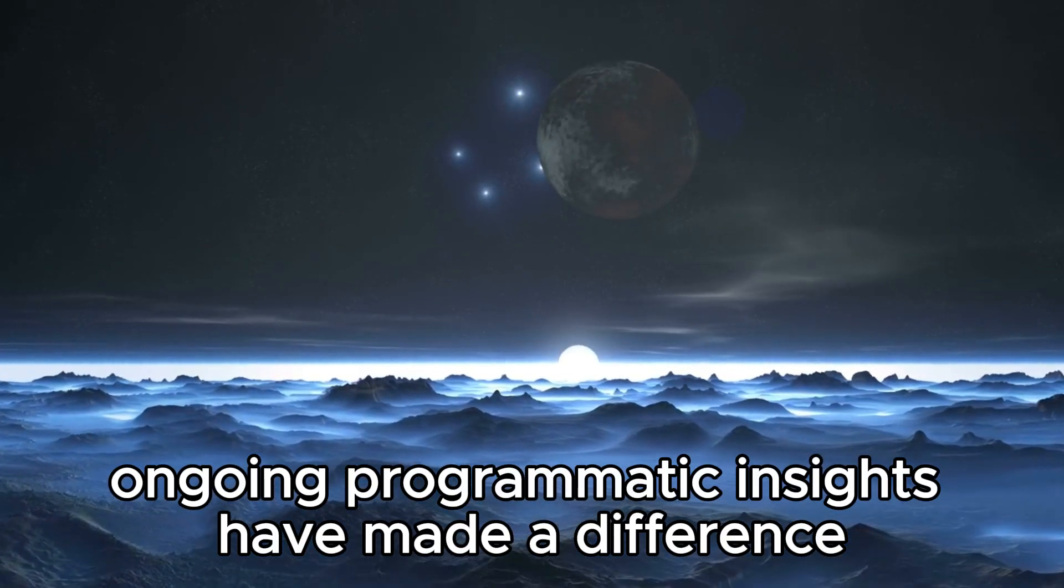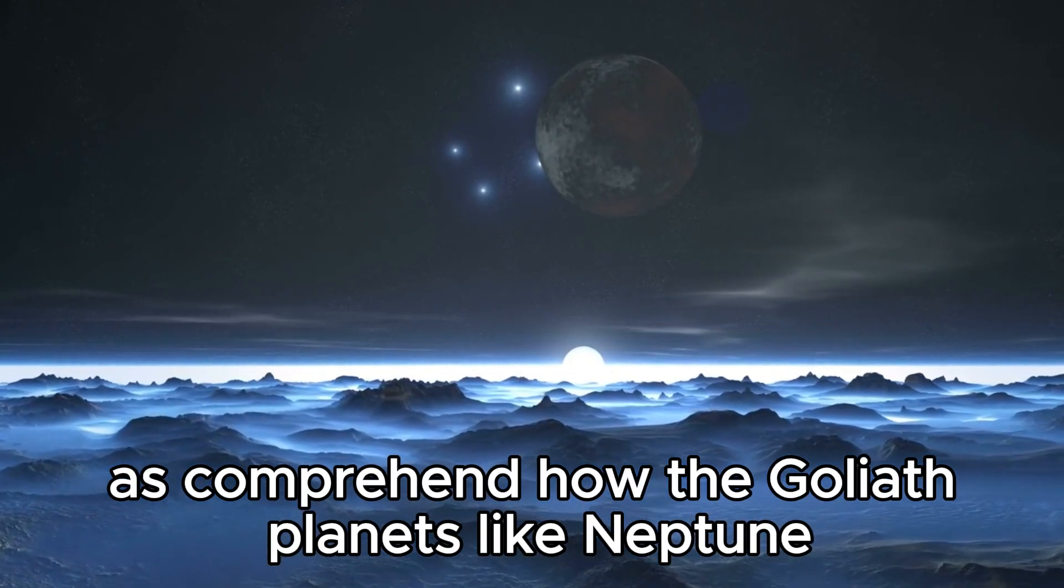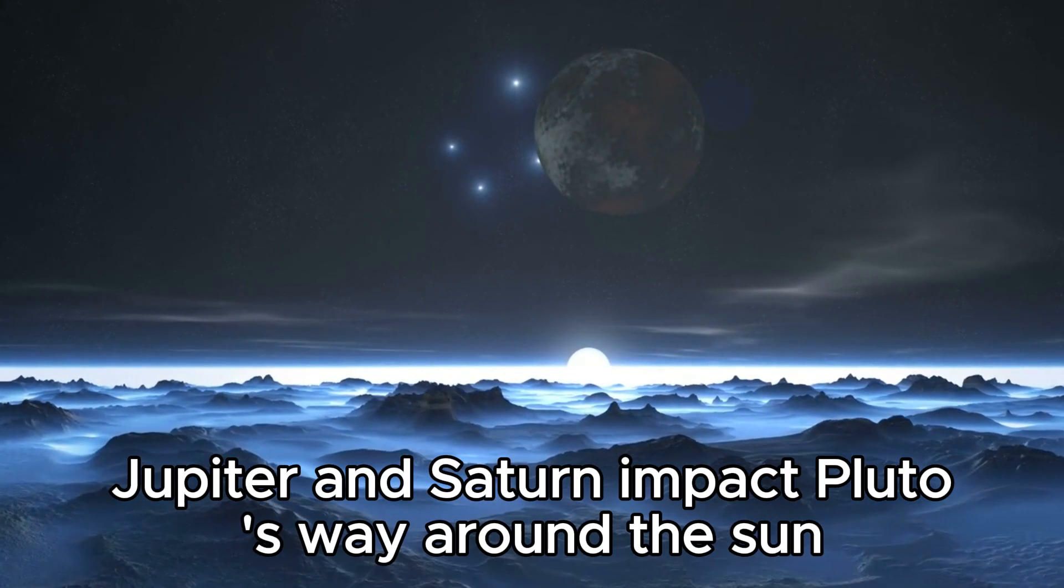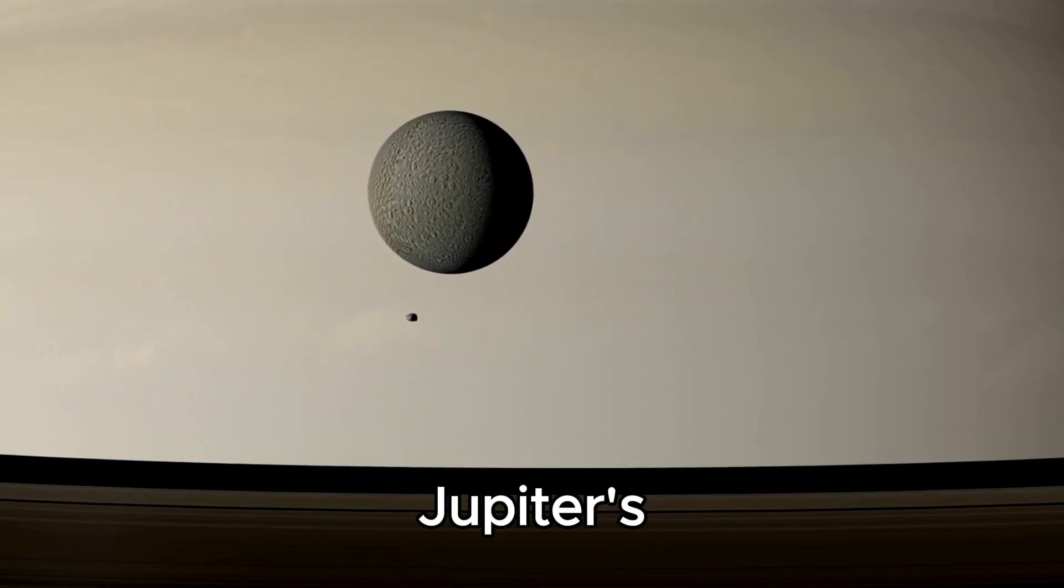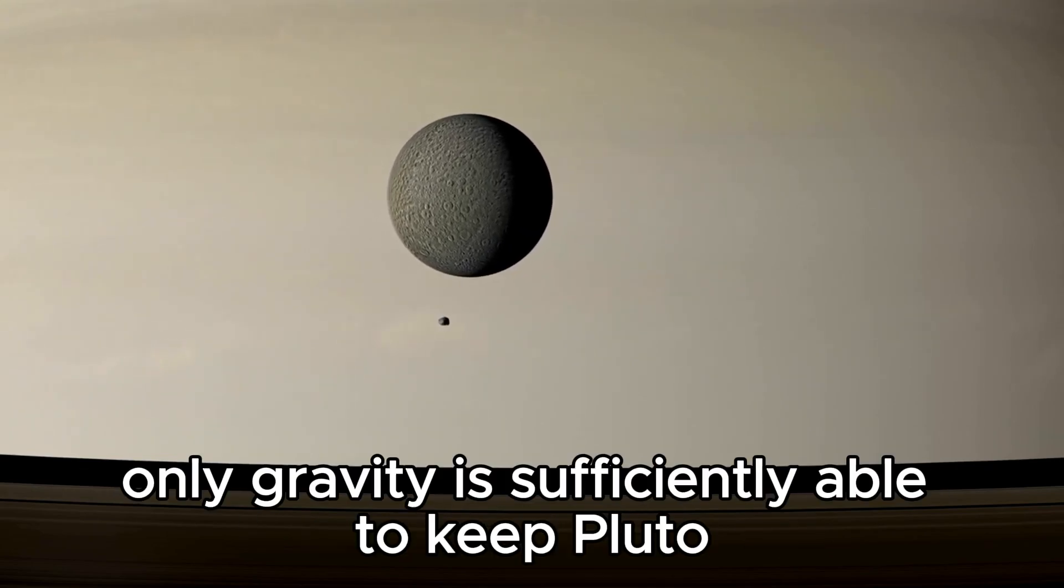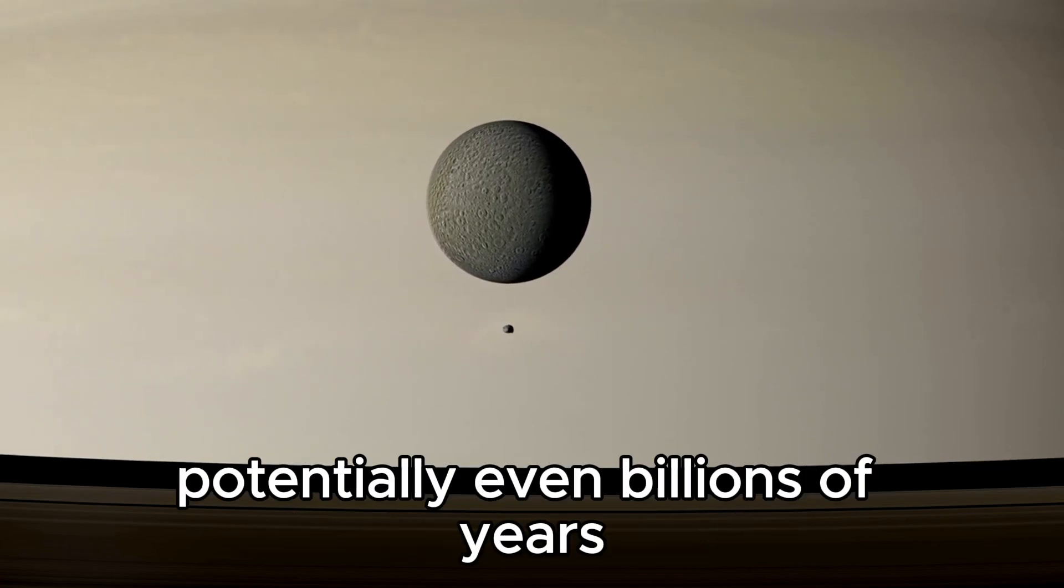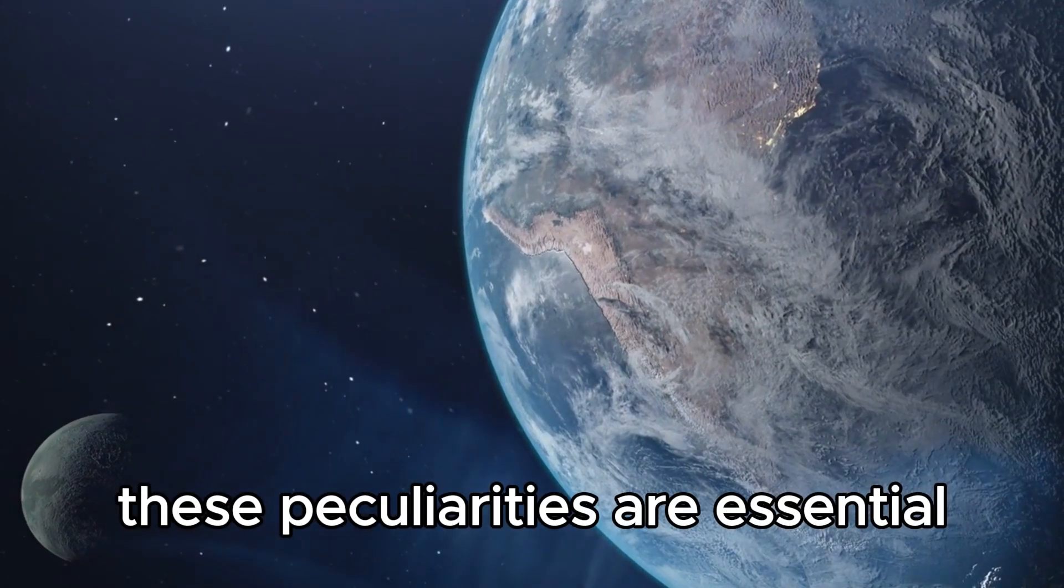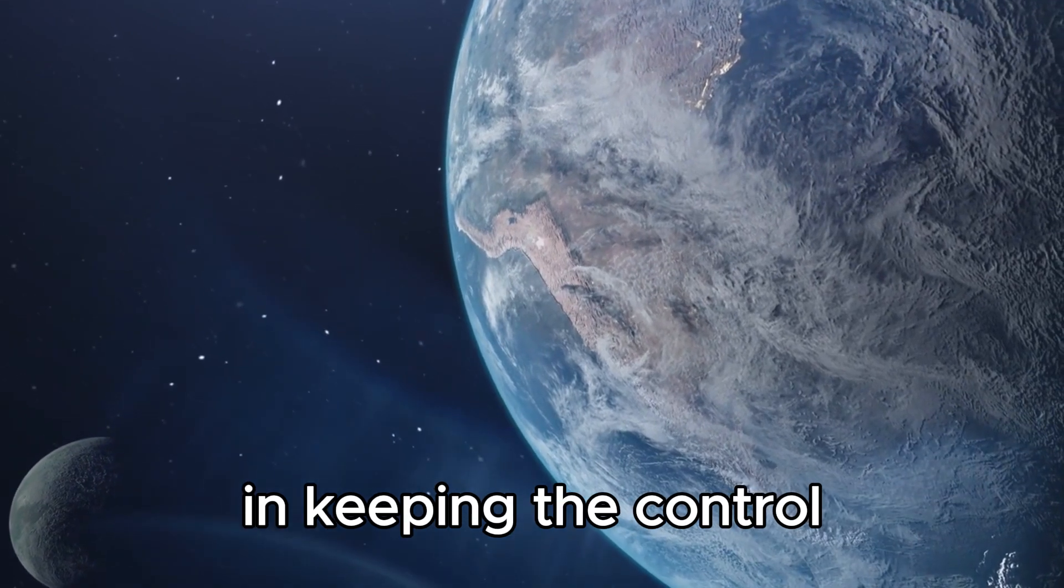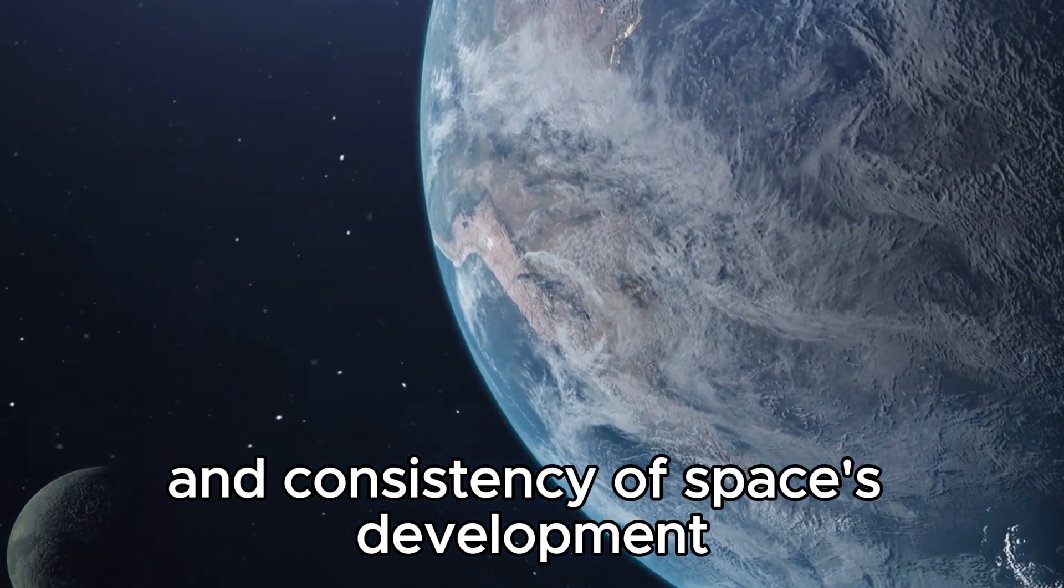Recent programmatic insights have helped us understand how the giant planets like Neptune, Jupiter, and Saturn impact Pluto's path around the sun. Jupiter's gravity alone is strong enough to keep Pluto on a steady path for an extremely long time, potentially even billions of years.